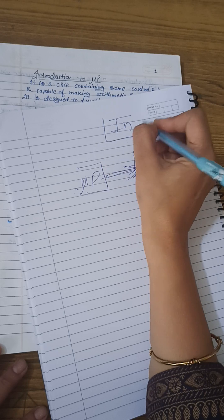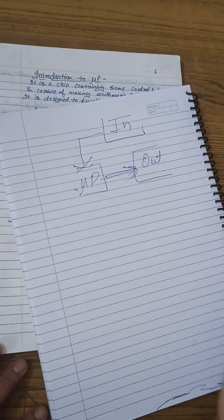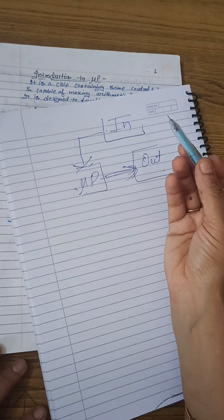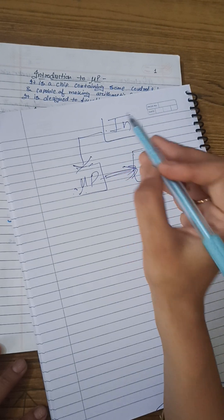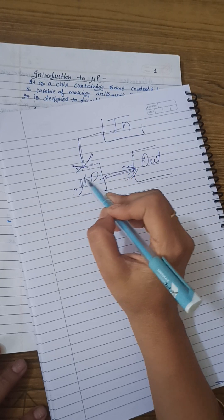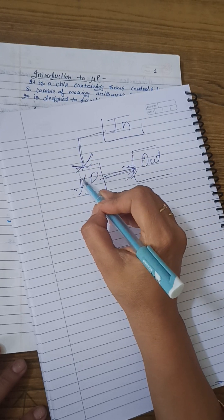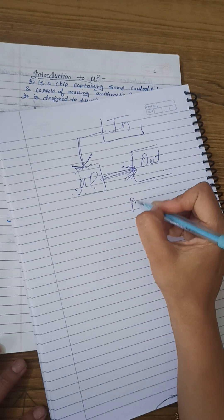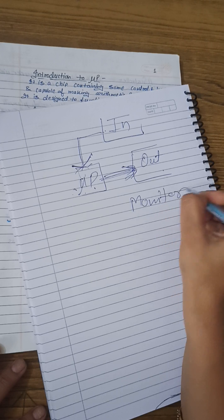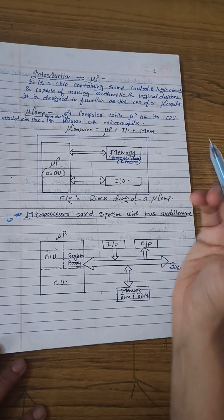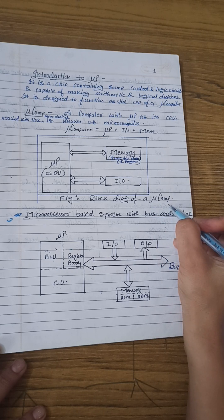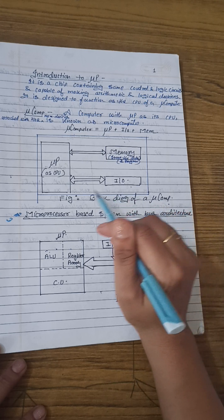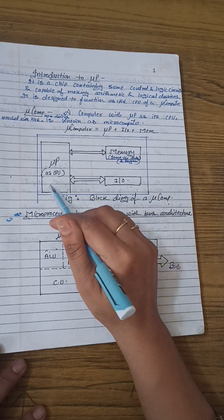Similarly, अगर यहाँ पर input device होता, तो यह arrow कुछ इस तरह का होता. Input device, यानि keyboard हो गया, mouse हो गया — यह input device microprocessor के पास signal लेकर आ रहा है, और output device में processor signal दे रहा है. This output device may be a monitor of the computer. So, the basic block diagram is very much clear: microprocessor, memory, and I/O devices — these three things we need to interface.